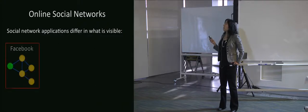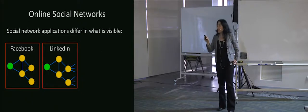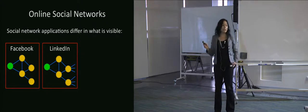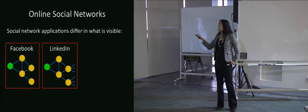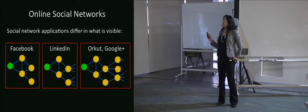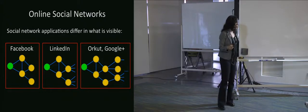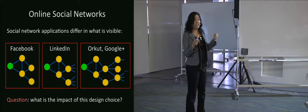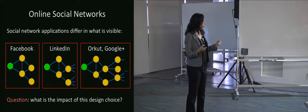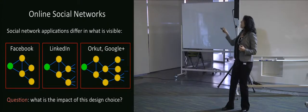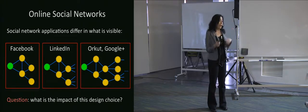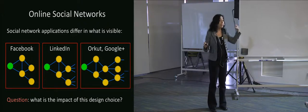So for social network applications: Facebook, at least at that time, you could see friends of friends but couldn't see how many friends they had. LinkedIn you could see friends of friends and how many friends they had. Orkut and Google Plus you could see friends of friends of friends and how many friends they had. What is the impact of this design choice? You might think it's just a little bit — you know, maybe I only need a log factor or something as many steps.